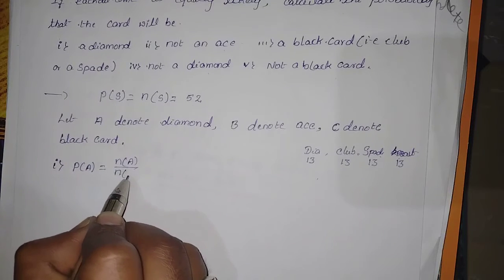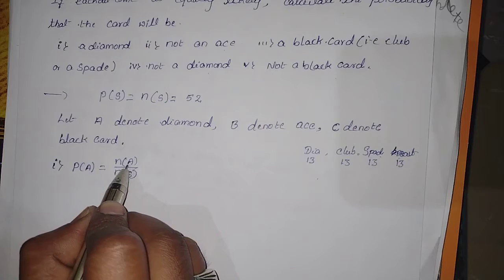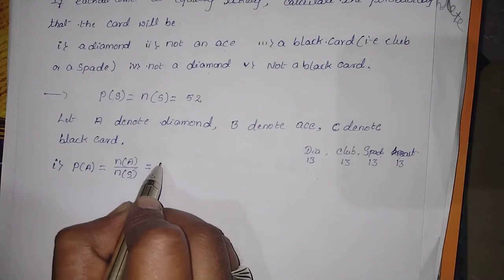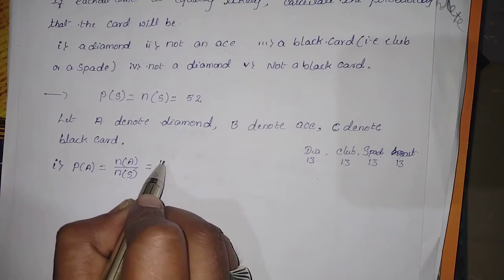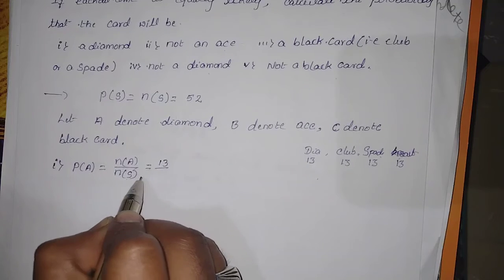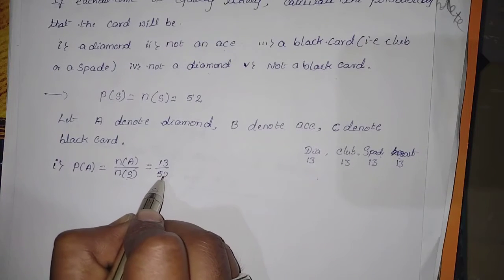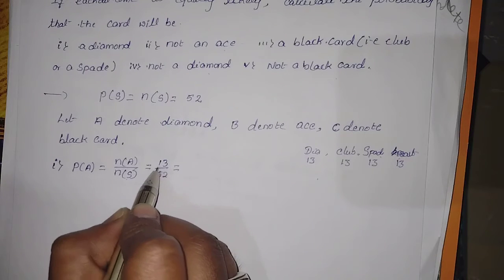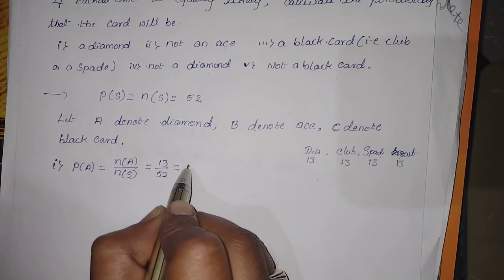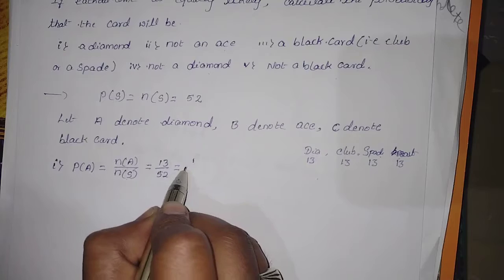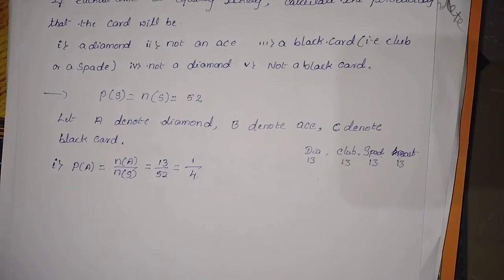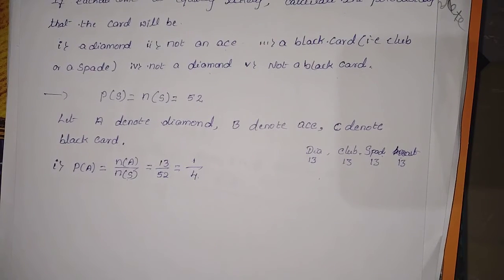P(A) = 13/52 = 1/4. This is the answer to the first question. For the second question, we need to find the probability of not an ace card. First, we find the probability of an ace card.